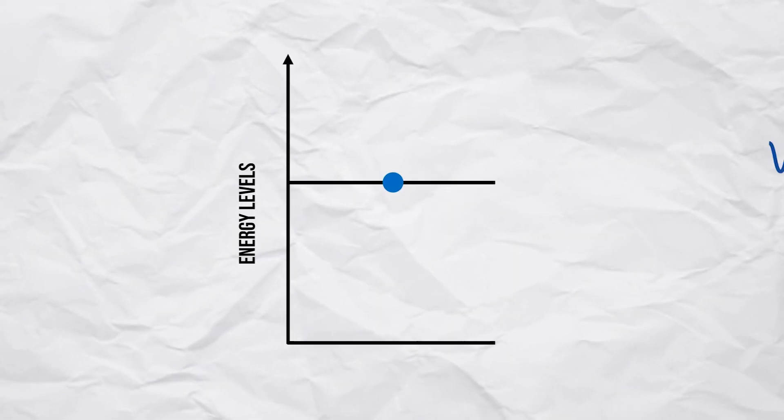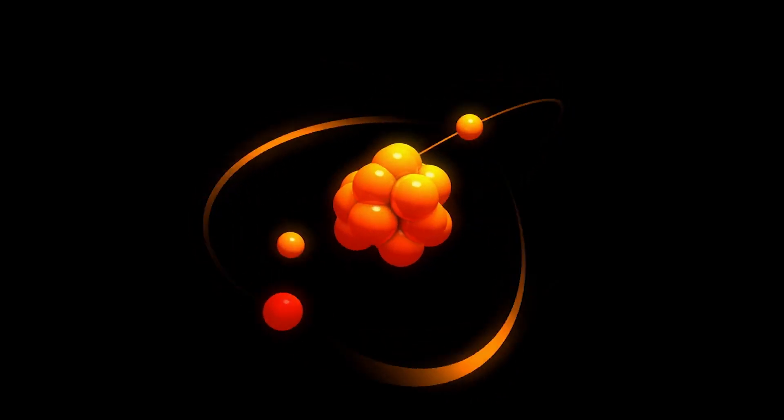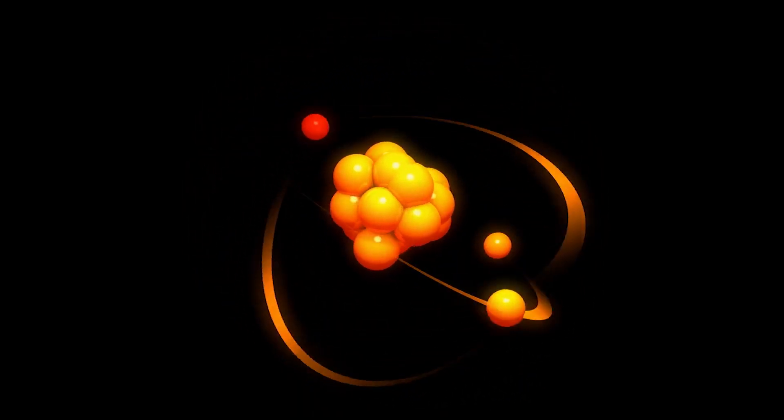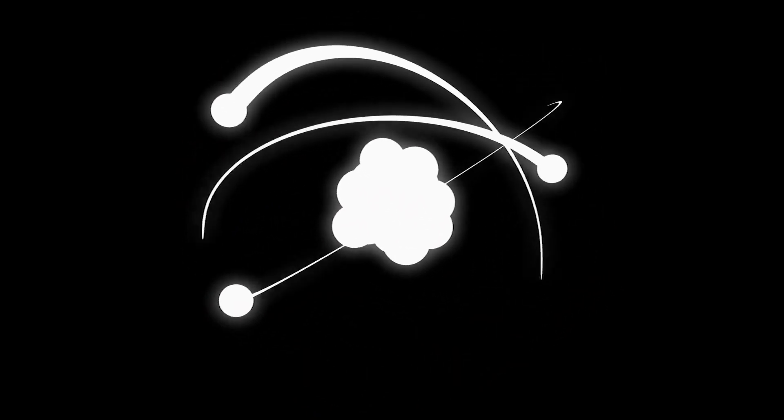The name comes from the fact the atom can no longer emit or absorb a photon. However, it's not so simple to get an atom into a dark state. And the practicality of this within quantum batteries is hotly contested. Nevertheless, there are methods to achieve this.